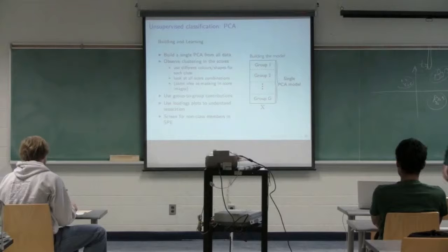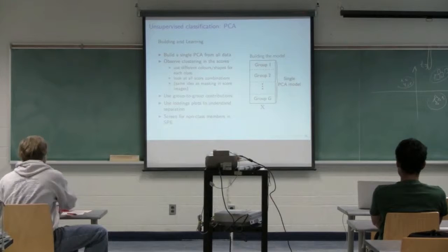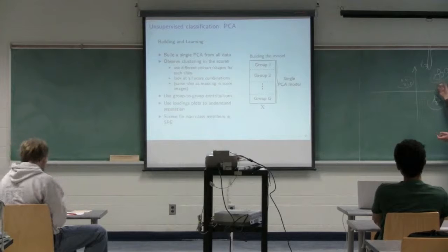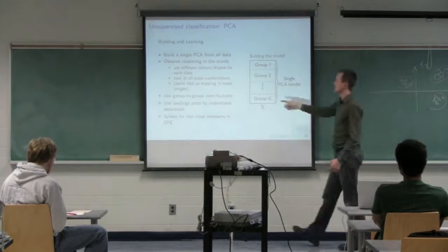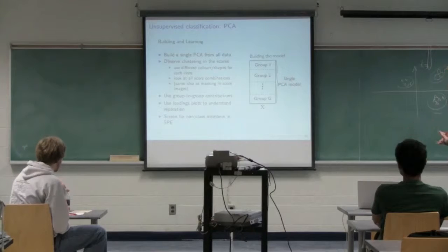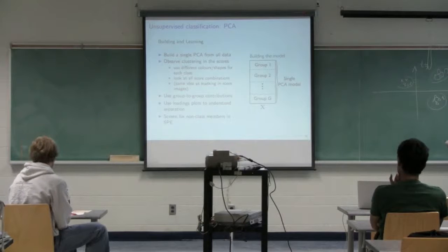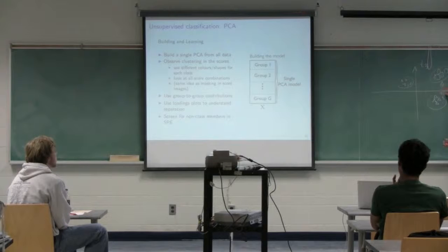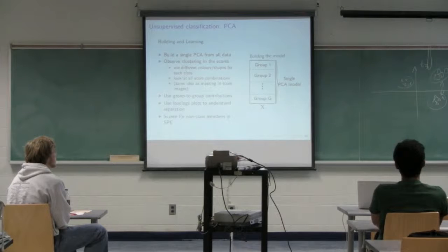If we do happen to have class labels imported in the software, we can color-code or use different shapes for group one, group two, group three — just to help visualize the clustering. It's a visualization tool and doesn't change the model in any way. If we do find groupings, we can use the usual PCA tools — specifically a group-to-group contribution plot — to understand why those groups separate.